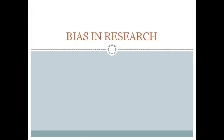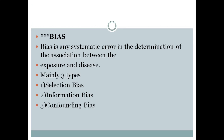Welcome back to our classes on epidemiology. Today we'll be dealing with bias in research. We have covered all the basic chapters of descriptive, analytical, and experimental epidemiologies. Now let's see what bias in research is. Bias, as the name suggests, is an unavoidable error in research.